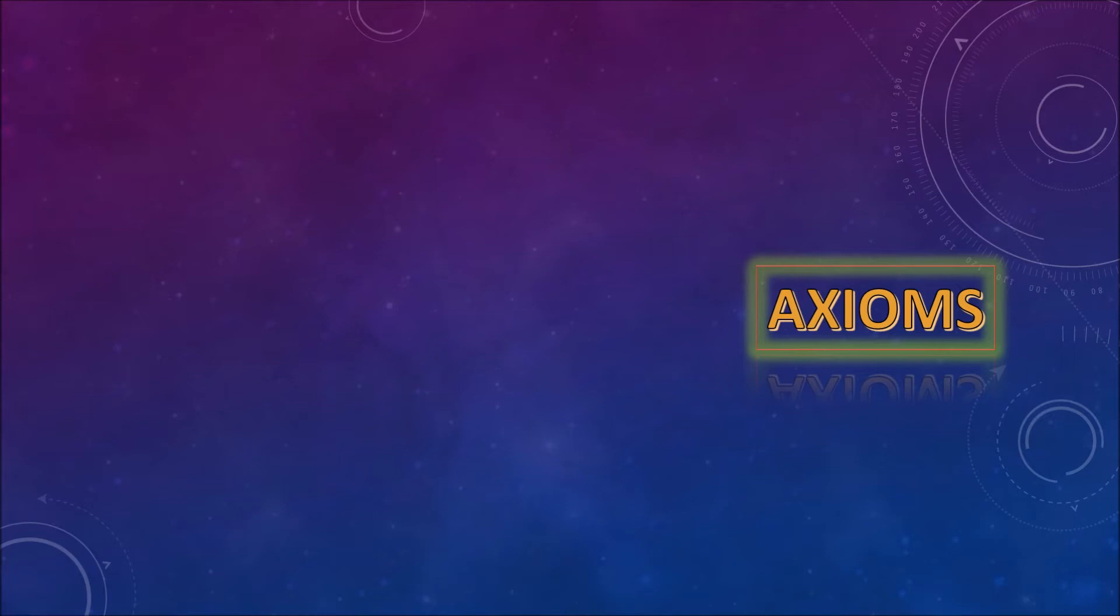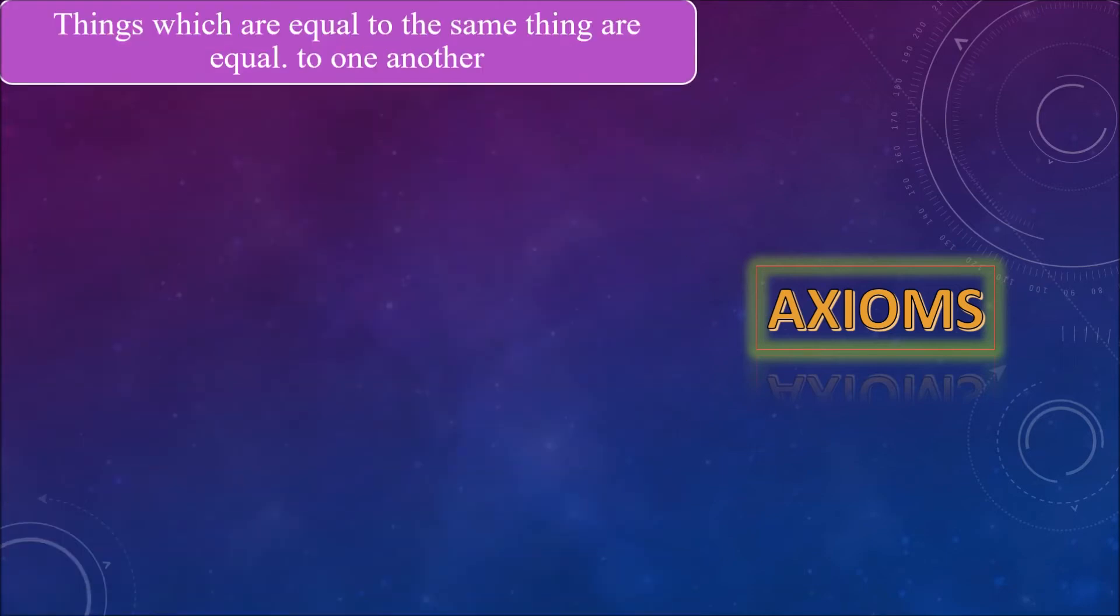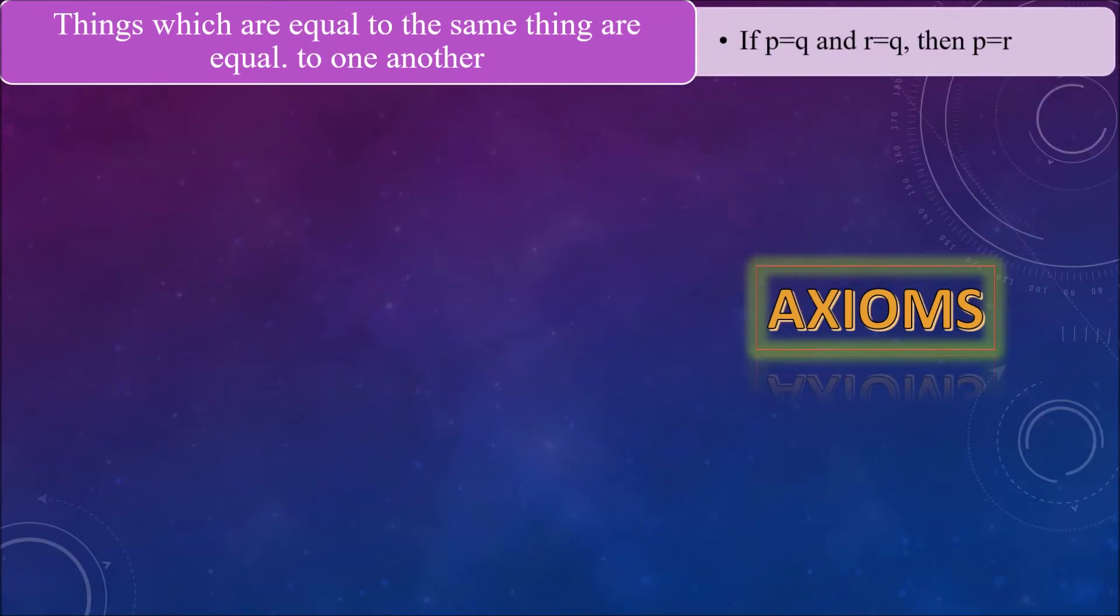Some of Euclid's axioms are: things which are equal to the same thing are equal to one another. That is, if p is equal to q and r is equal to q, then p equals to r also.